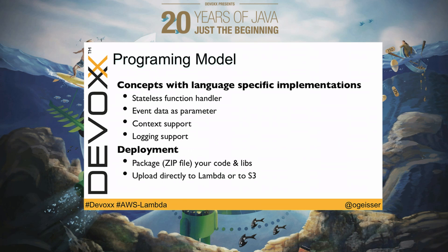Talking about the programming model: there are different languages supported, each with their own syntax and semantics, but there are similar concepts across all of them. Your function handler — the actual code that gets executed — should be stateless. You get the event data as a parameter to a function in Node.js or a method in Java. You have context support, for example to check timeout values, and you have logging support. All your logs are written to the CloudWatch log service.